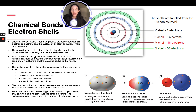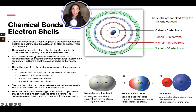Polar bonds refer to a covalent type of bond with a separation of charge — one end is negatively charged and the other is positive. The hydrogen-oxygen bond in water is one example of a polar bond. We can also see two chlorine atoms forming a nonpolar covalent bond, where bonding electrons are shared equally and there are no charges. In a polar covalent bond, electrons are shared unequally and there are partial charges. In an ionic bond, there is a complete transfer of one or more valence electrons — sodium loses an electron to chloride.